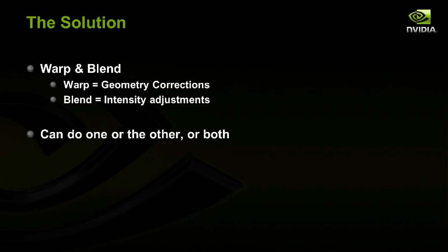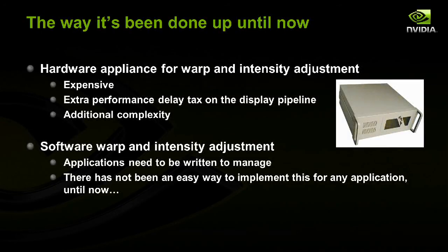The solution to fixing these problems in multiple projector configurations is called warping and blending. The warp is the geometry correction that distorts geometry to fix differences relative to other screens. The blend handles intensity adjustments in the overlap region or balances intensity between displays. People typically do both together, but they are orthogonal operations. Previously, people used a hardware appliance like the Mercator box, which does both warp and intensity adjustment, but these boxes are very expensive, add performance overhead, and add complexity to an already complex environment.